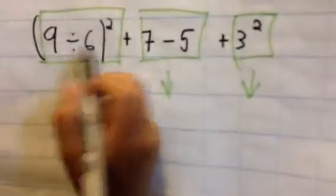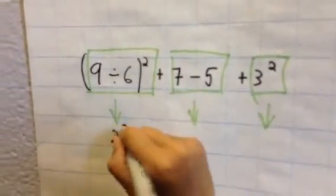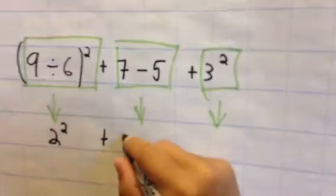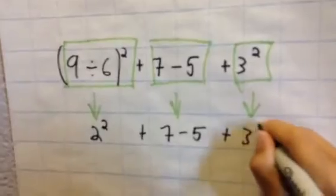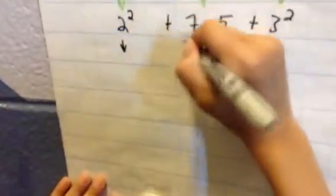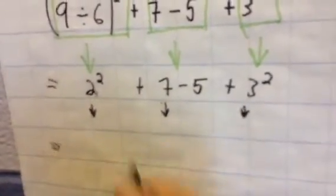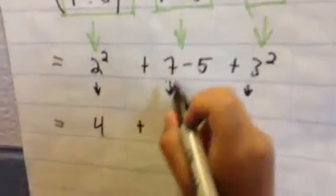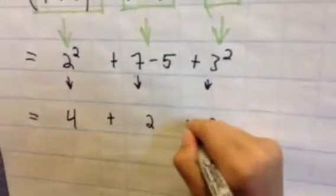So 9 divided by 6 equals 2 to the power of 2, plus 7 minus 5, plus 3 to the power of 2. Don't forget to put your equal signs. So 2 to the power of 2 is 2 times itself, which equals 4. Plus 7 minus 5 equals 2. And then 3 to the power of 2 is 3 times 3 equals 9.